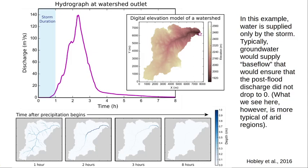This is an example of a model simulation output where we have no base flow — just water supplied by the storm and only the storm. The plots show the depth of flow with time after the beginning of precipitation. At one hour, immediately when the storm shuts off, water is flowing across all streams through the landscape. After two hours, it's concentrated in the main stem. After three hours, some remains in the main stem but much has left. After eight hours, almost everything has exited the landscape. This is characteristic of a small, dry-environment catchment with no base flow.